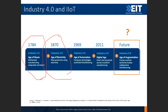Then we moved further into Industry 3.0, which is what my generation is familiar with. We started having the use of information technology and electronics, both from a manufacturing side and in our social lives — a digital revolution. The 1960s was the information era: we had PLCs, we saw the internet, and a rise in scalable automation. We were able to repeat processes reliably and achieve lower costs in production.